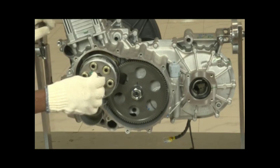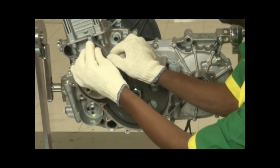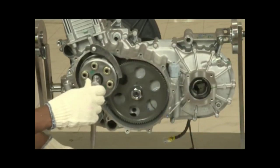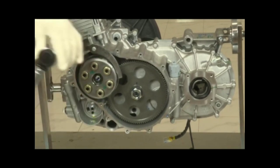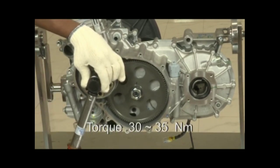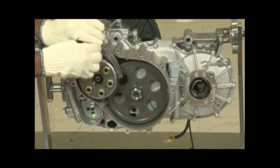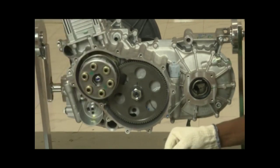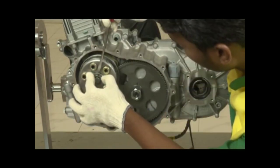Install the bolt along with tab washer and lock plate. Use special tool to hold the clutch assembly. Use 13 mm socket. Tighten the bolt. Apply torque. Fold the lock plate.